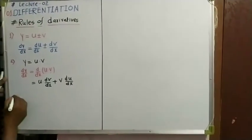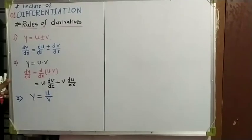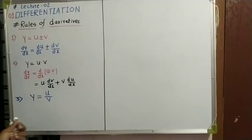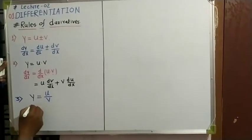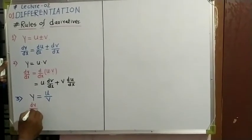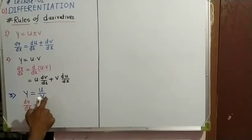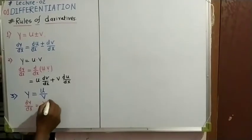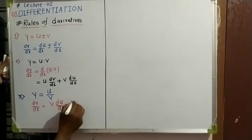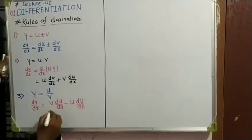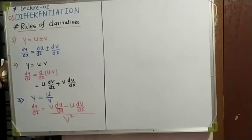Number three rule: if two functions are in the form of u and v in division form, where u and v are two functions of x, then the differentiation dy/dx is: the second function as it is, into the derivative of the first, minus the first function as it is, into the derivative of the second, divided by the square of the second function. These are the three important rules for the derivative of two functions.